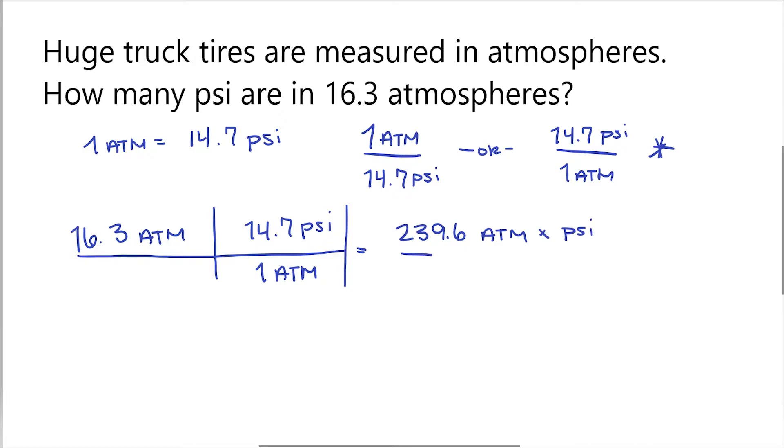And on the bottom, all we have is 1 atmosphere. Now since I have the unit of atmospheres on top and bottom, I'm going to cancel those out, leaving me only with psi. So now 239.6 divided by 1 is still 239.6. And the units I'm left with are psi. So now we know that 16.3 atmospheres is equal to 239.6 psi. And that is how you convert from atmospheres to psi.